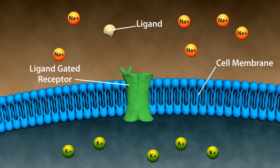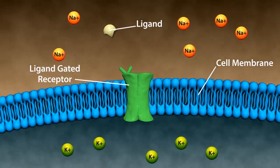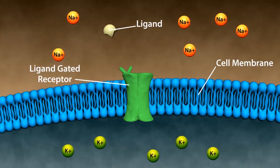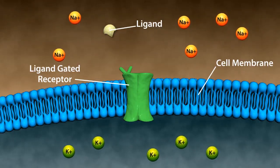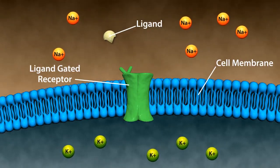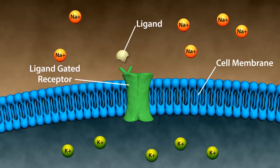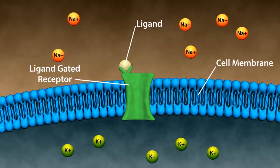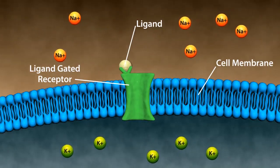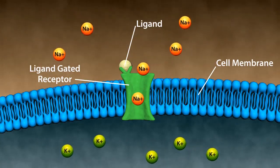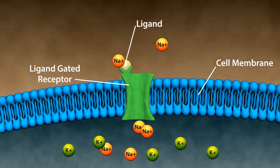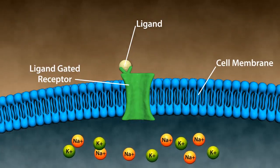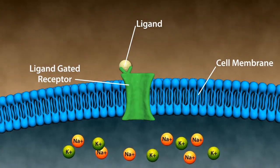In ligand-gated receptors, the cell membrane requires specific ligand-gated channels for movement of hydrophilic molecules through it. First, the ligand binds to the receptor, then the receptor gate opens. For example, acetylcholine binding to nicotinic receptors. In this example, sodium enters the cell and an electrochemical gradient is created, resulting in depolarization.